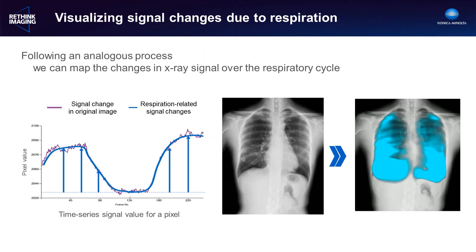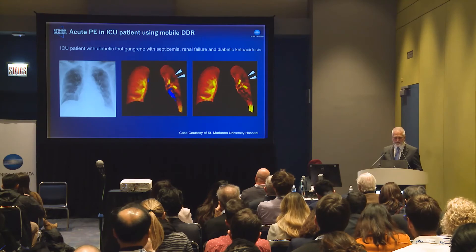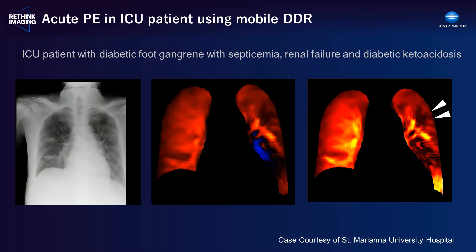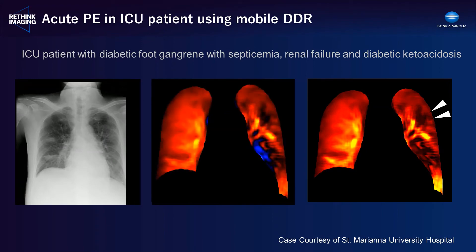What can we do with this information? Here we have a case from St. Mariana University Hospital. This was an ICU patient who was imaged with DDR on the mobile unit at the bedside. After about seven days in the ICU, the respiratory condition worsened. And due to renal failure, pulmonary CT angiography was contraindicated due to the iodinated contrast agent. DDR was performed and it revealed an area of focal under-intensity — an area of low blood volume within the lungs. This patient was diagnosed with a pulmonary embolism.